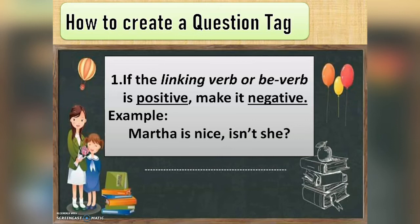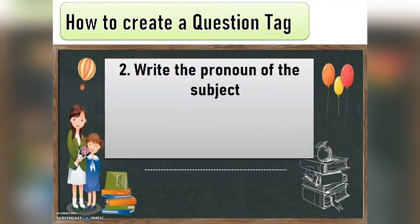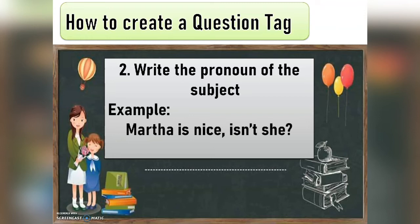In the statement 'Martha is nice,' the linking verb is the word 'is.' Martha is nice, and that's the one we are going to transform into a negative form. Second, we have to write the pronoun of the subject. In the statement 'Martha is nice,' the word Martha is the subject, that's why we have to write the pronoun form of that subject. Now we have already formed the question tag, which is 'isn't she?'